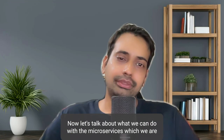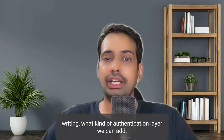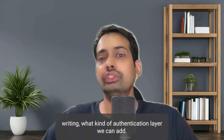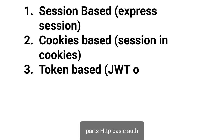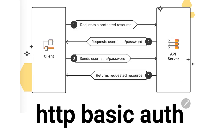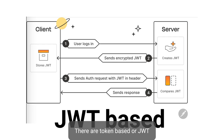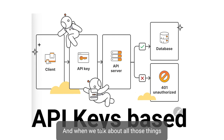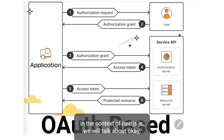Now let's talk about what we can do with the microservices we are writing — what kind of authentication layer we can add. These are divided into four different parts: HTTP basic auth, API key-based authentication which works server-to-server, bearer token-based or JWT token-based authentication, and OAuth. We'll discuss all of these in the context of NestJS.